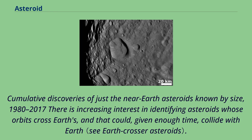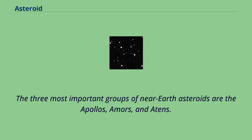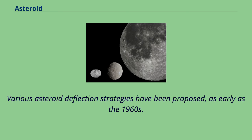There is increasing interest in identifying asteroids whose orbits cross Earth's, and that could, given enough time, collide with Earth. The three most important groups of near-Earth asteroids are the Apollos, Amors, and Atens. Various asteroid deflection strategies have been proposed as early as the 1960s.